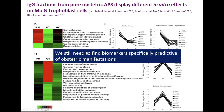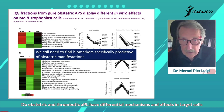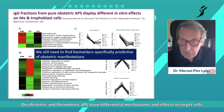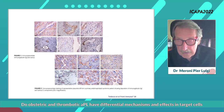We still need to find biomarkers specifically predictive of obstetric manifestations. We don't have effective biomarkers able to predict whether a given antiphospholipid antibody positivity will be associated with thrombosis, pregnancy morbidity, or both.